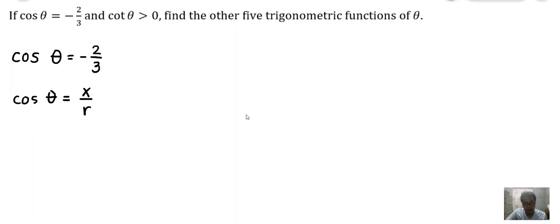Based on this, we can say that x = -2 and r = 3. Remember, r cannot be negative. When a given value is negative, the negative should be x and not r. So x = -2 and r = 3.